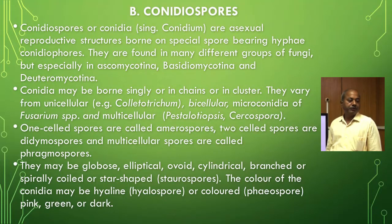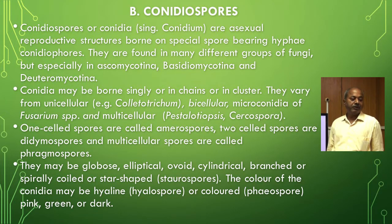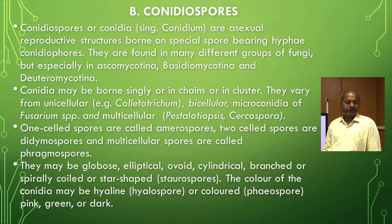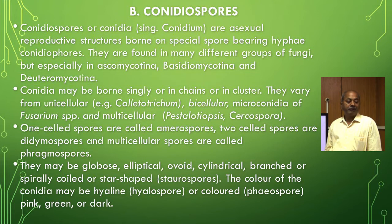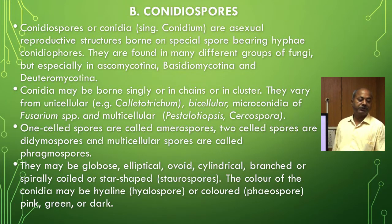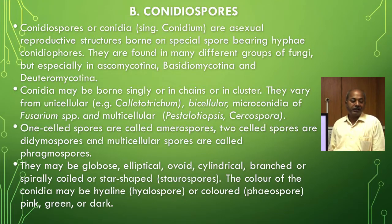Conidiospores or conidia (singular: conidium) are asexual reproductive structures borne on special spore-bearing hyphae called conidiophores. They are found in many groups, especially Ascomycotina, Basidiomycotina, and Deuteromycotina. Conidia may be borne singly, in chains, or in clusters, and vary from unicellular (as in Botrytis), bicellular (microconidia of Fusarium), to multicellular (as in Cercospora, Pestalotiopsis). One-celled spores are called amerospores, two-celled spores are called didymospores, and multicellular spores are called phragmospores.